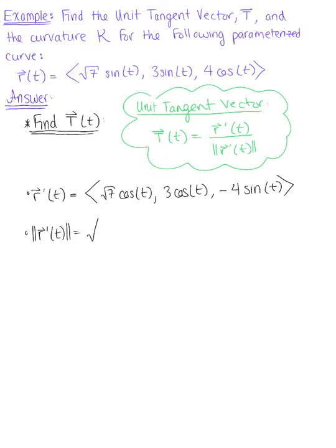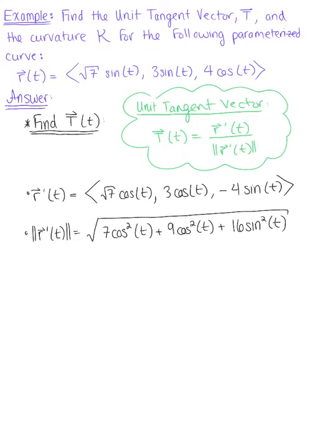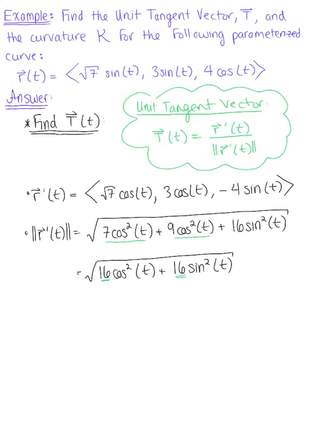The magnitude is the square root of the sum of the squares of each component. So we have the square root of 7 squared, which leaves us with 7 cosine squared of t, plus 9 cosine squared of t, plus 16 sine squared of t. We have two like terms within this radicand that we can combine, giving us the square root of 16 cosine squared of t plus 16 sine squared of t.